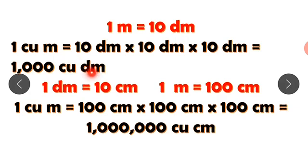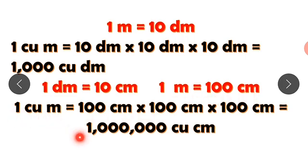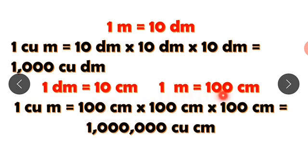One decimeter equals 10 centimeters and one meter equals 100 centimeters. Let's convert one cubic meter into cubic centimeters. One cubic meter means one meter times one meter times one meter, which we convert to 100 centimeters times 100 centimeters times 100 centimeters, giving us one million cubic centimeters.